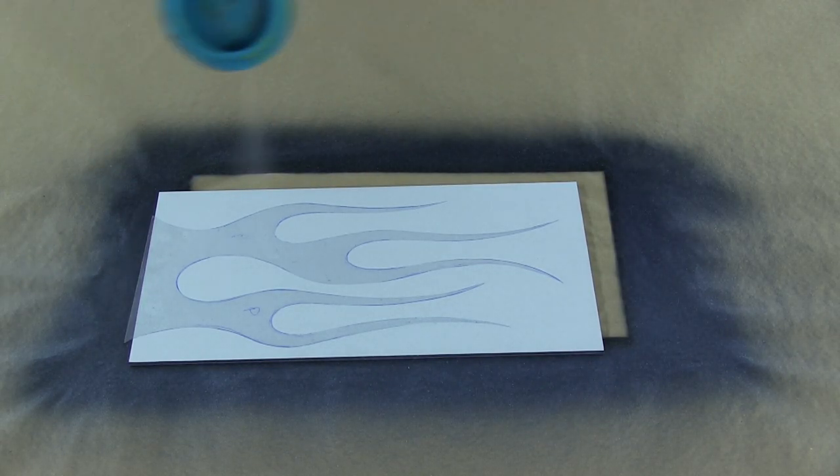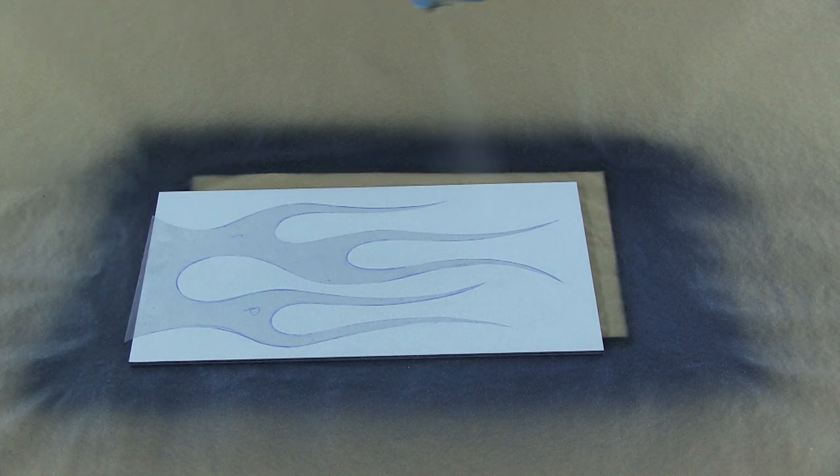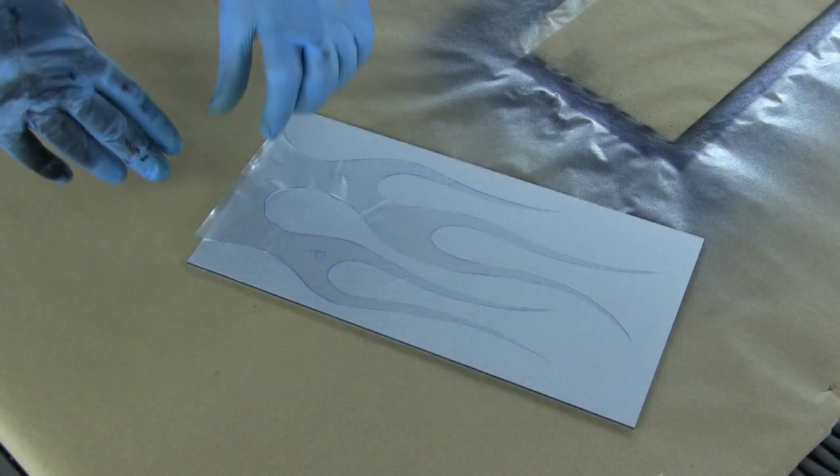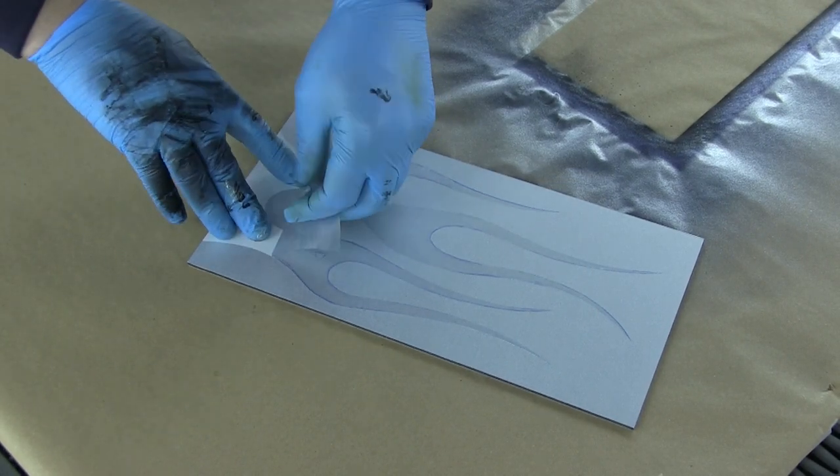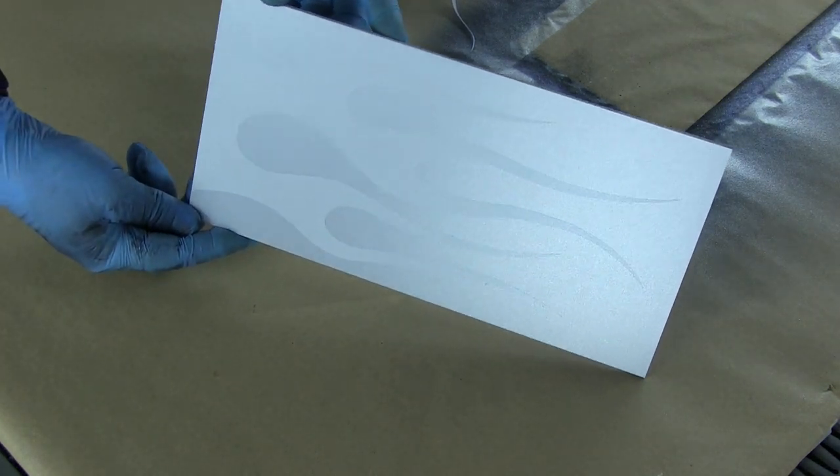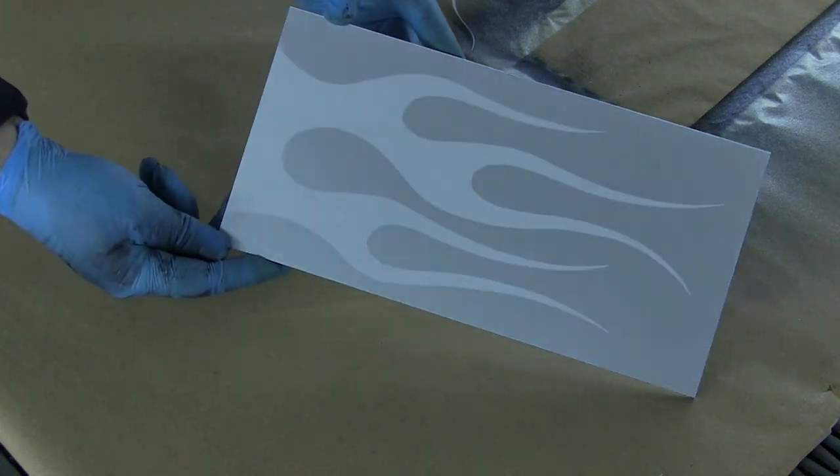And I'm going to come in now with aluminum coarse. Again, medium would work fine, but I've just chosen coarse here. Three light coats, and what I'm going to do now is remove my frisk, and you can just see clearly the difference between the metallic white and the aluminum.